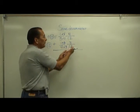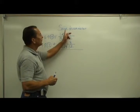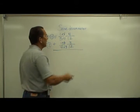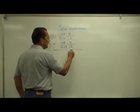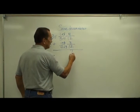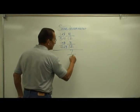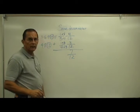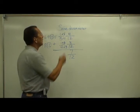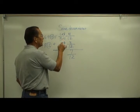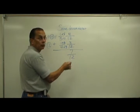Using equivalent fractions, I now have two fractions that have the same denominator. Now I simply add four plus three, which is seven, and the denominator stays the same. And there I've answered the problem: one-third plus one-fourth is equal to seven-twelfths.